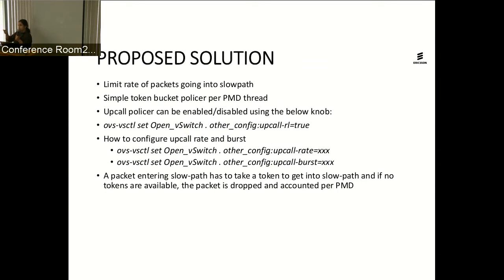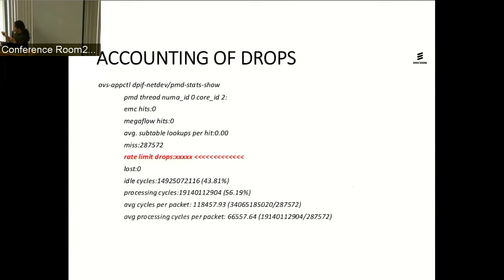Whenever a packet goes for an upcall, it has to take a token and then move forward to perform the slow path — which means it will go ahead and perform NAT, flow table translation, and everything. If there are no tokens available at that point, it is safe to assume we can drop the packet and account it under PMD stats. We put it in the rate-limit drops for that particular PMD, and that will be shown in 'pmd-stat show'.